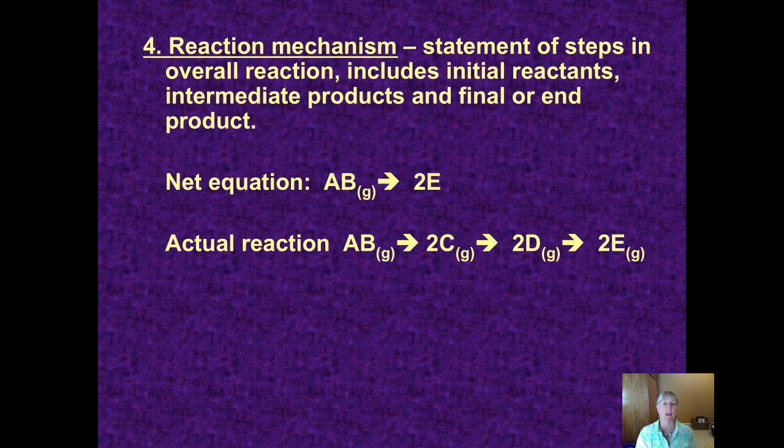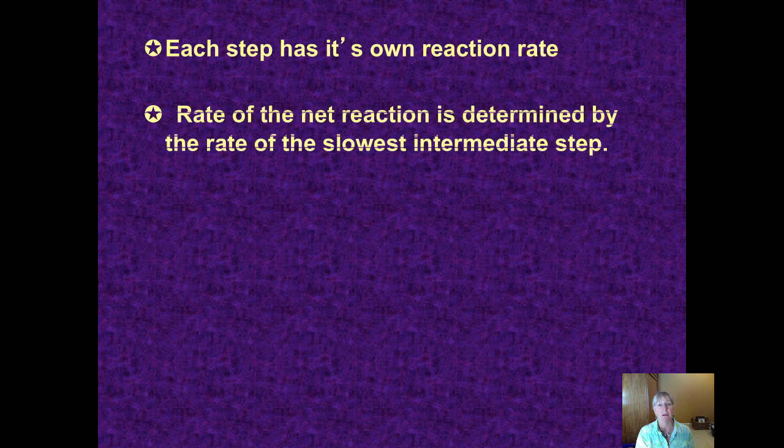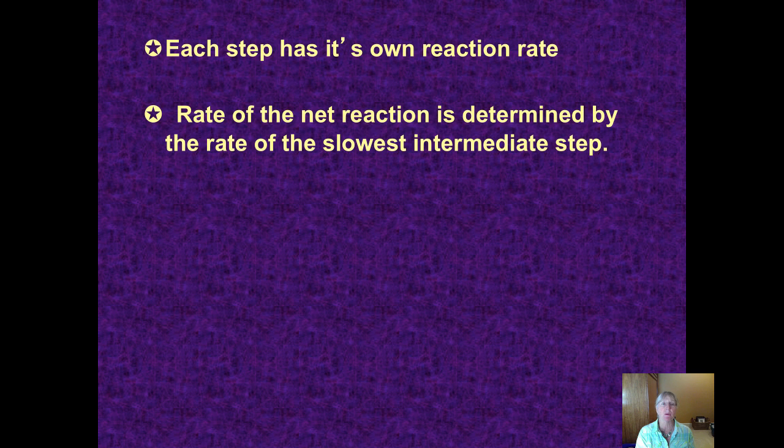Now the rate at which a reaction occurs is a function of each individual reaction in that series having its own reaction rate. So the rate of the overall net reaction is determined by the rate of the slowest intermediate step.